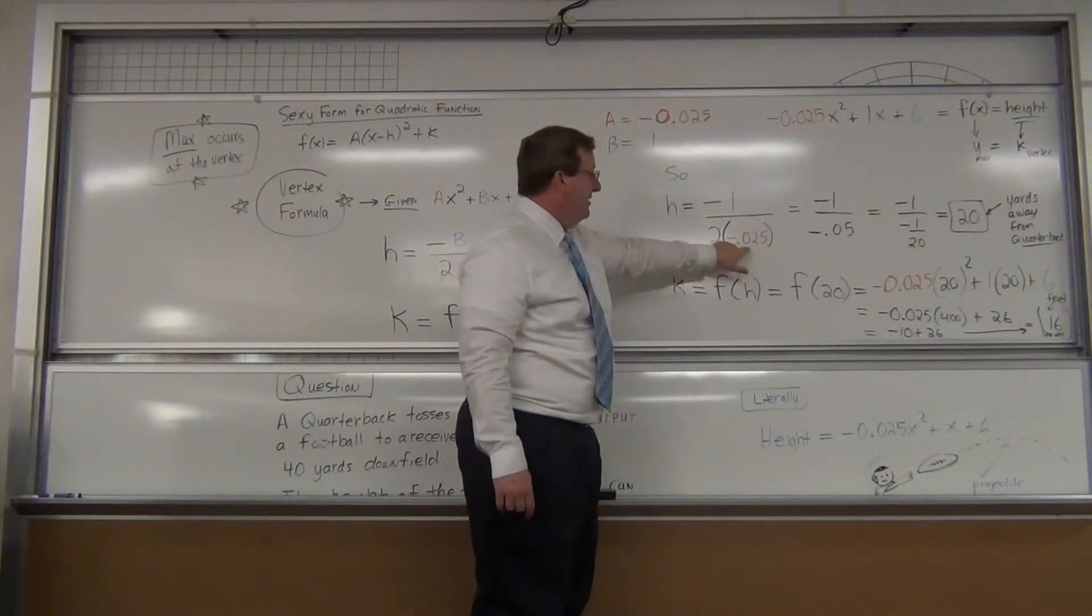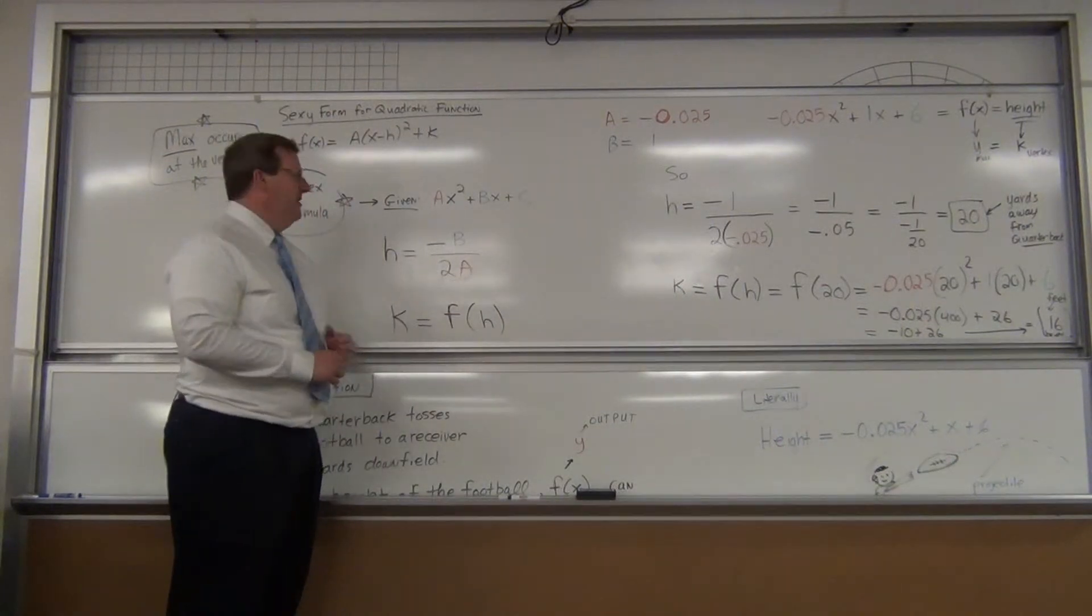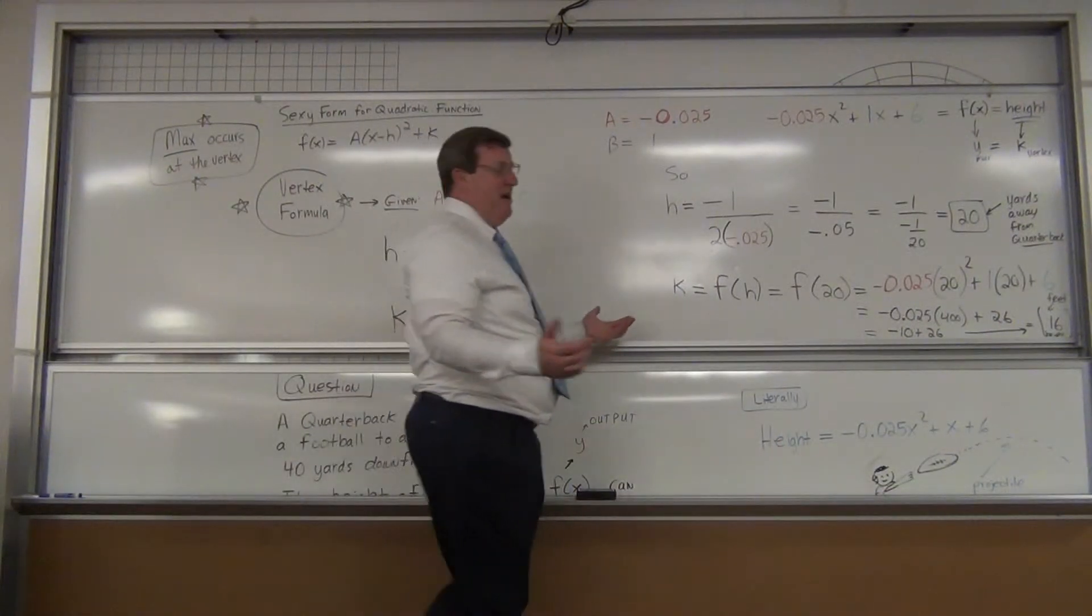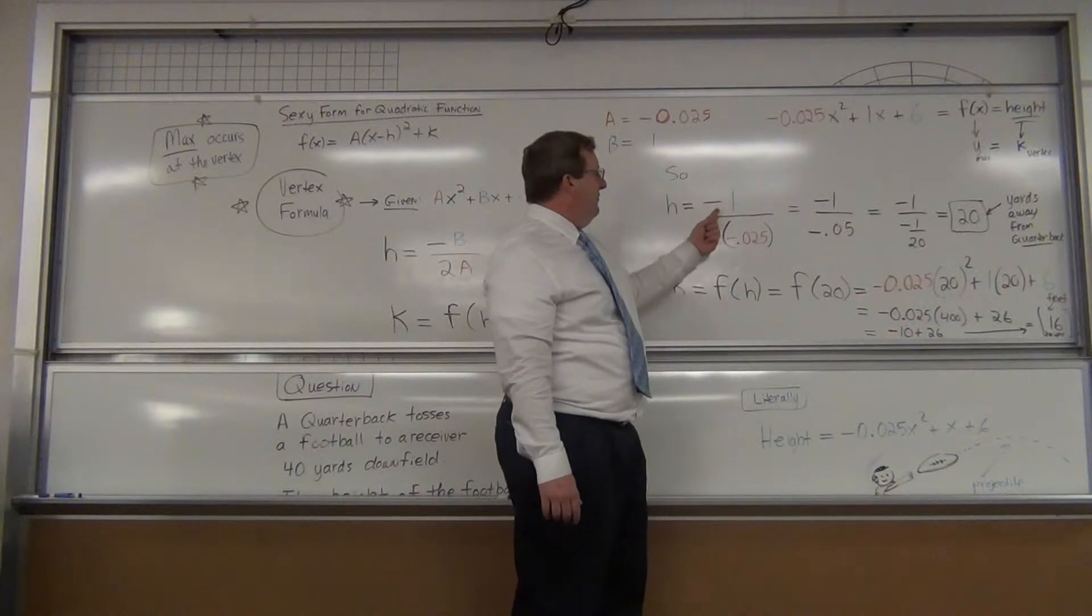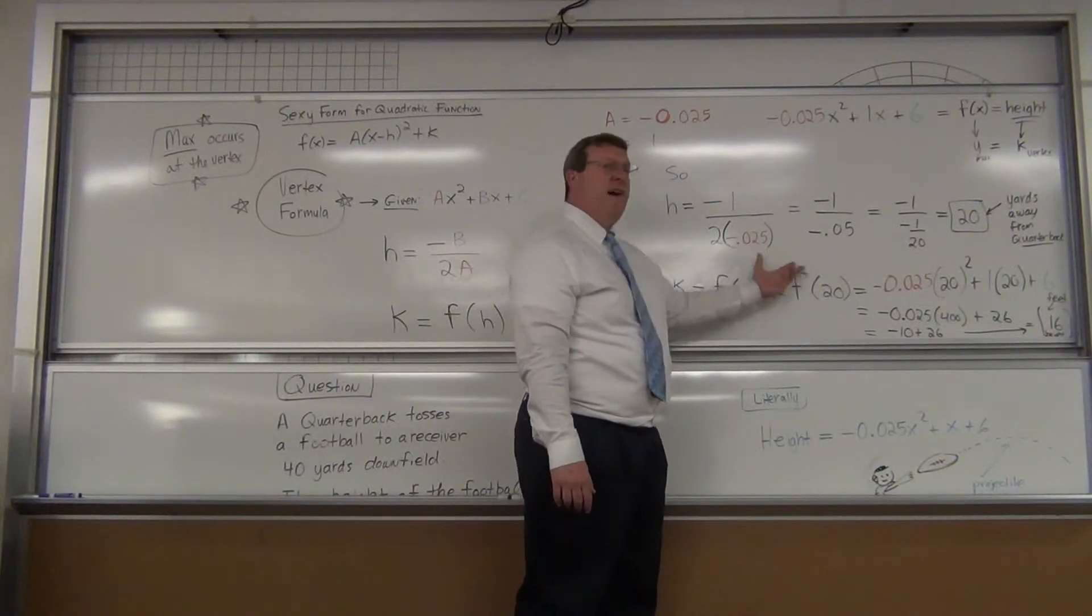So I plug it in right where you see the a, so just plug it right into the formula. It's beautiful. Now you just get your calculator out. So h is equal to negative 1 divided by 2 times negative 0.025. Real smooth.